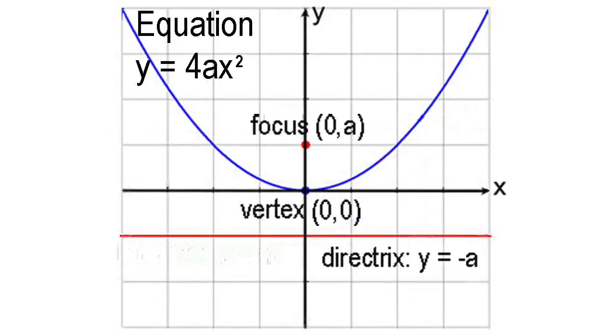The Cartesian equation of a parabola that opens upward and has its vertex or turning point at the origin is y equals 4ax squared, where a is the distance from the vertex to the focus, and the quantity 4a is known as the latus rectum.